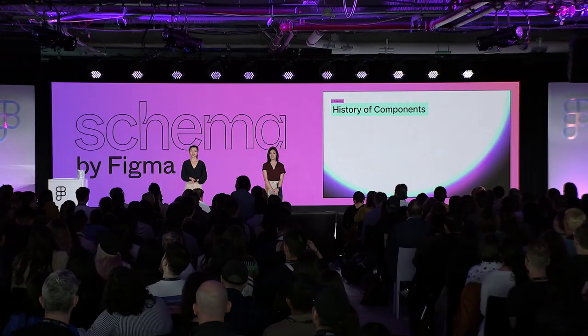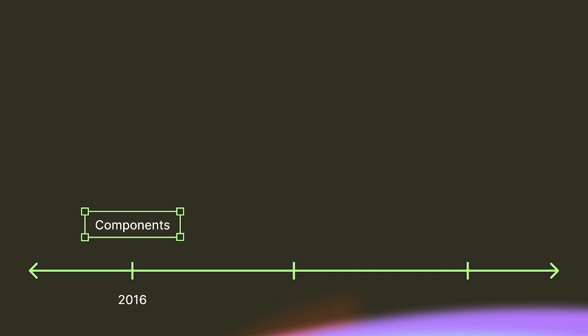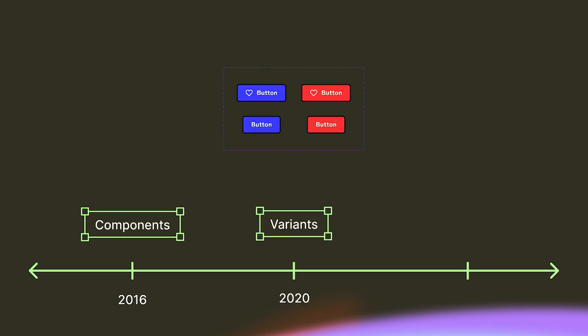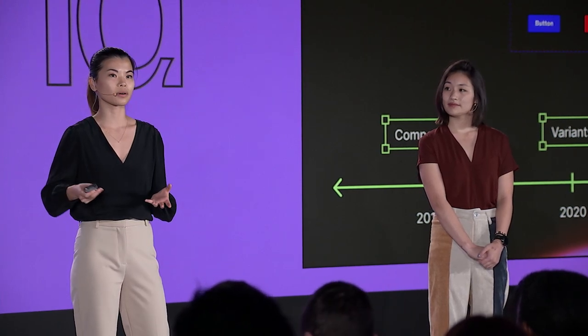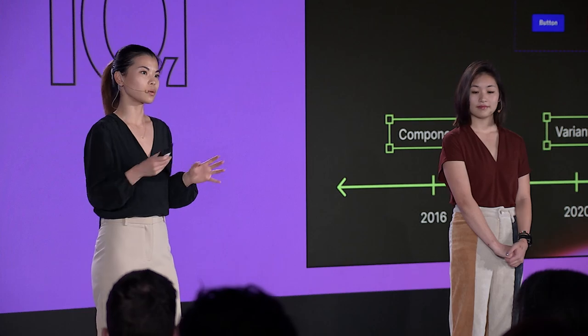But before we dive into props, let's first take a step back and talk about how components came to be. If you're a longtime Figma user, you might remember that we first launched components all the way back in 2016, which was a really huge launch for us because it built the foundation for allowing larger design teams to scale their design systems. A couple years later in 2020, we launched variants, which multiplied the power of components by letting people create a component set with multiple related components.